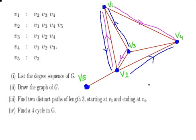We have, in the second case, v3 to v1 to v2 to v4. The first case was v3 to v2 to v1 to v4.